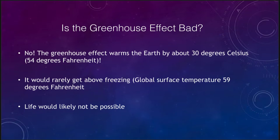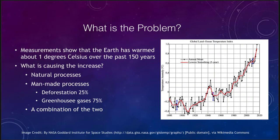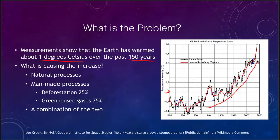Measurements have shown that the Earth has warmed by about one degree Celsius over the past 150 years. Looking at the data with the mean temperature set at zero, back in the late 1800s and early 1900s we were a little bit below that average, but the temperature has definitely climbed over that time period.